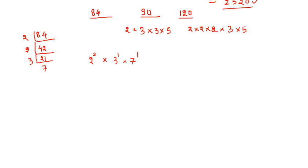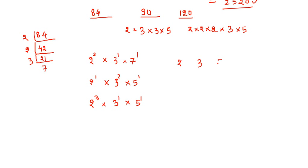The prime factors of 84 are 2 to the power 2, 3 to the power 1, and 7 to the power 1. The prime factors of 90 are 2 to the power 1, 3 to the power 2, and 5 to the power 1. The prime factors of 120 are 2 to the power 3, 3 to the power 1, and 5 to the power 1. So we take all the prime factors: 2, 3, 5, and 7, and find their highest powers.